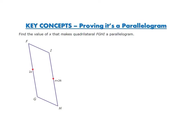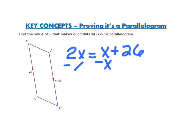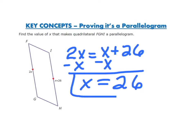We are asked to find the value of x that makes quadrilateral FGHI a parallelogram. That means we need to find a value for x that makes both of those sides the same length. So we set them equal: 2x equals x plus 26. Subtracting x from both sides gives x equals 26. So 2 times 26 is 52, and 26 plus 26 is 52 — both sides equal 52, making them congruent.